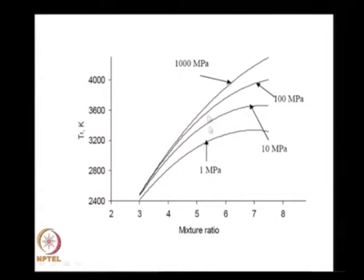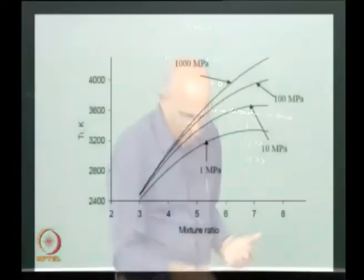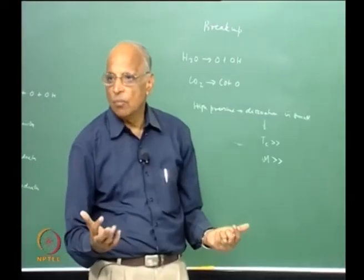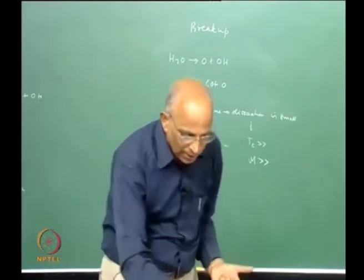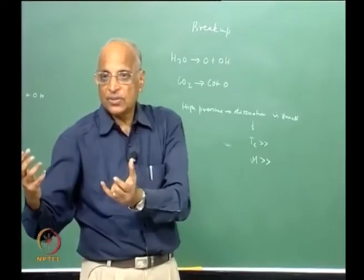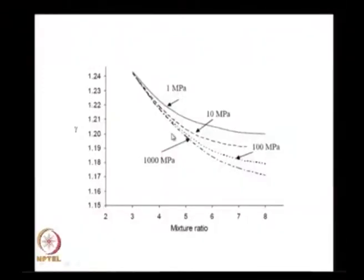At a given mixture ratio, the temperature increases at high pressure because the amount of dissociation is less. The molecular mass of gases also increases with both mixture ratio and pressure, because at higher pressures you have less dissociated gases, which have low molecular mass. Regarding gamma: gamma is higher for monatomic species (1.67 for helium) and lower for complex molecules like CCl4 (around 1.13). As chamber pressure increases, dissociation is less and the gamma value becomes smaller.